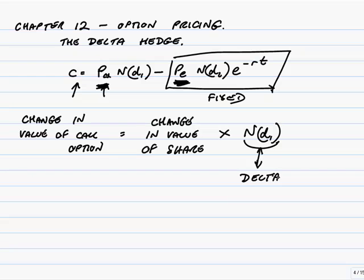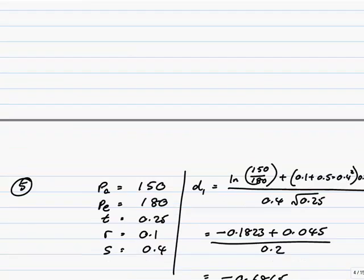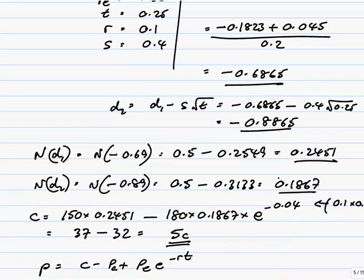Now, how can we use that? If you look back for a moment to example 5 on the previous page that we did in the last session, we had a share, the share price was $1.50, the exercise price $1.80, and so on. We worked out ND1 to be 0.2451.